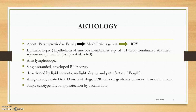The causative agent belongs to the family Paramyxoviridae, genus Morbillivirus — the Rinderpest virus. It is epitheliotropic, meaning it has an affinity for the epithelium of mucosal membranes of the GI tract. Keratinized stratified squamous epithelium (skin) is not affected. It is also lymphotropic — WBC cells are affected. The virus is a single-stranded, enveloped RNA virus, inactivated by lipid solvents, sunlight, drying, and putrefaction.